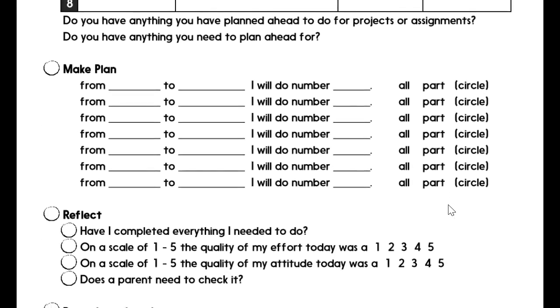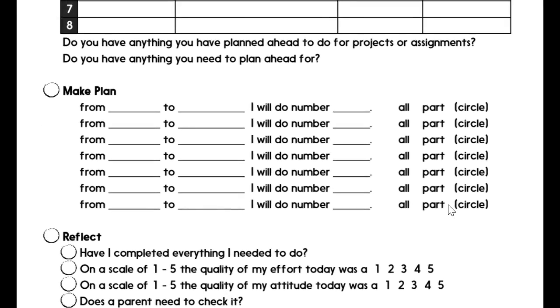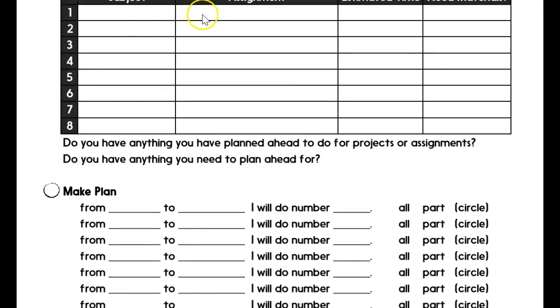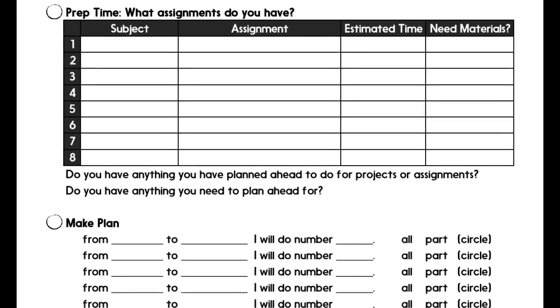Then once they have all their assignments, they make the plan for how they're going to do the assignments. So they put in the times. From 3:45 to 4:15, I'm going to do number six. And I'm going to do either all of it or part of it, and they circle how much they're going to do. Because here's the thing: if they list an assignment that is really big, and the kid is 10 years old and they estimate the assignment is going to take an hour, then I don't expect them to sit for an hour and do that assignment.